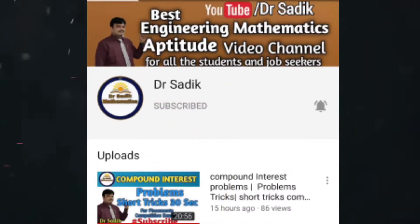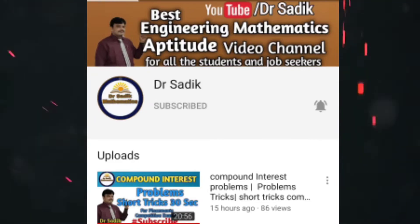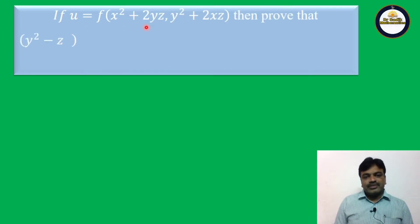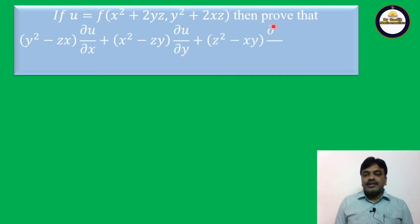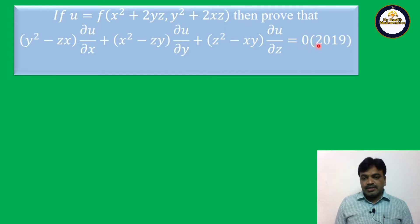Subscribe to Dr. Sadiq Mathematics channel for getting more online videos. If u is equal to f of x square plus 2yz, y square plus 2xz, then prove that y square minus zx into ∂u/∂x plus x square minus zy into ∂u/∂y plus z square minus xy into ∂u/∂z is equal to zero.